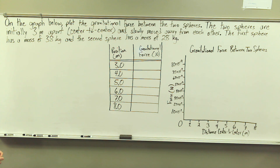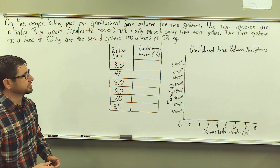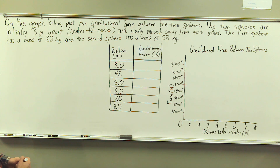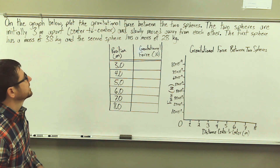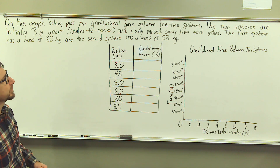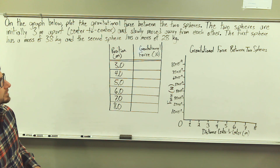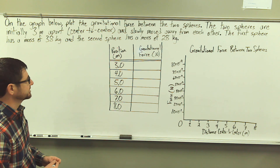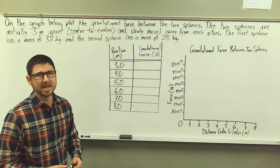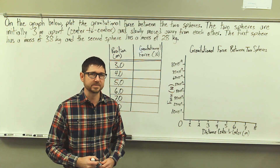On the graph below, plot the gravitational force between the two spheres. The two spheres are initially three meters apart — this is a center-to-center distance — and slowly moved away from each other. The first sphere has a mass of 38 kilograms and the second sphere has a mass of 28 kilograms.